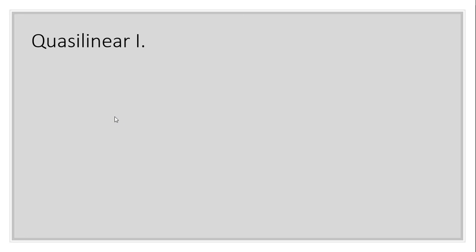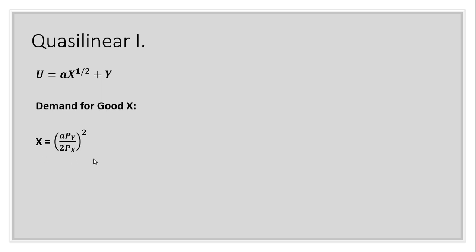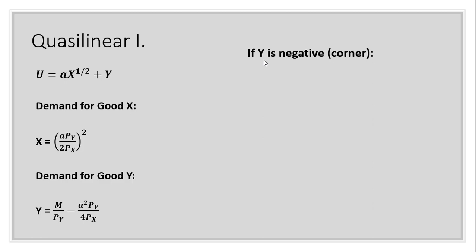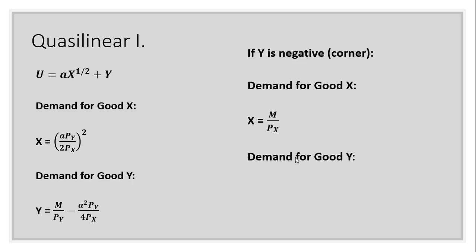Next we look at a quasi-linear utility function of a fairly popular form. Given that form, the demand for good x will look like this, and the demand for good y will look something like this. If y is negative, you're dealing with a corner solution — in that case the consumer would spend all income on good x. The demand for good x would then be income divided by the price of good x, and the demand for good y would be zero.